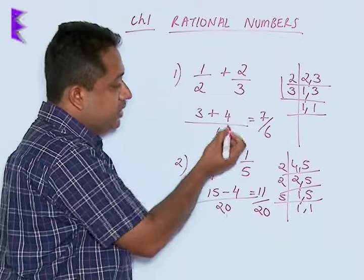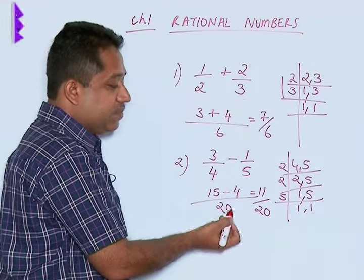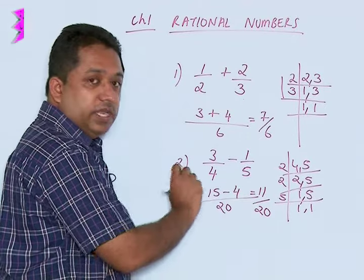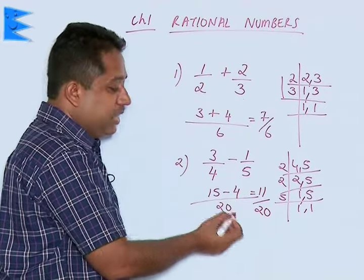So these are the methods by which we can add or subtract rational numbers by taking LCM. However, if the denominators are same, you can simply add or subtract.